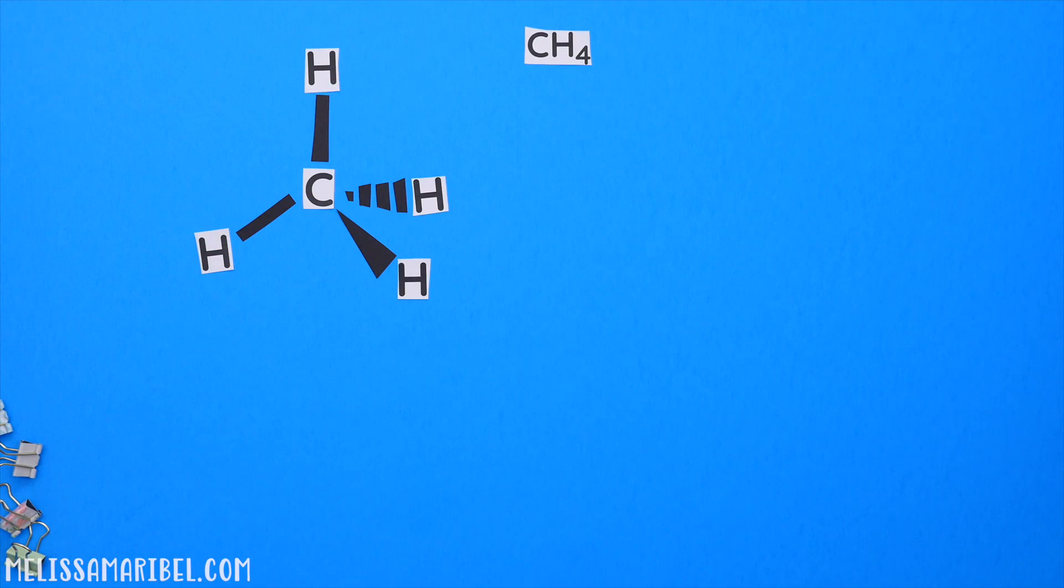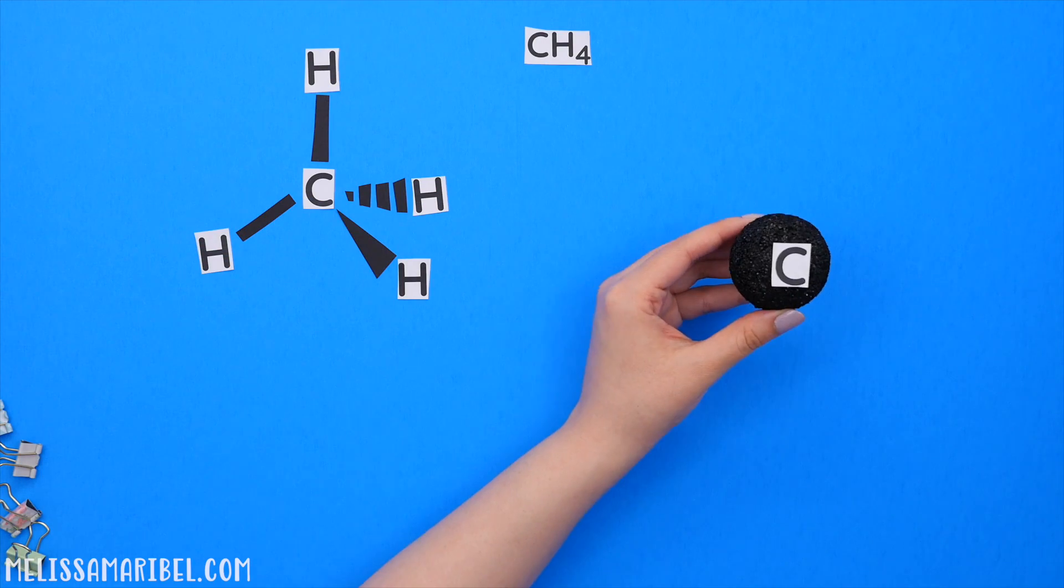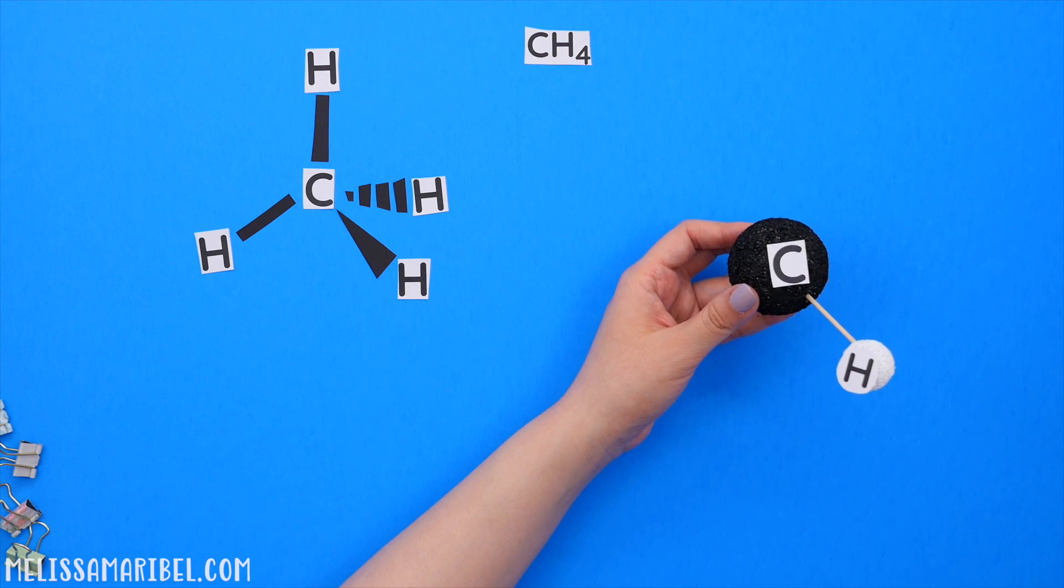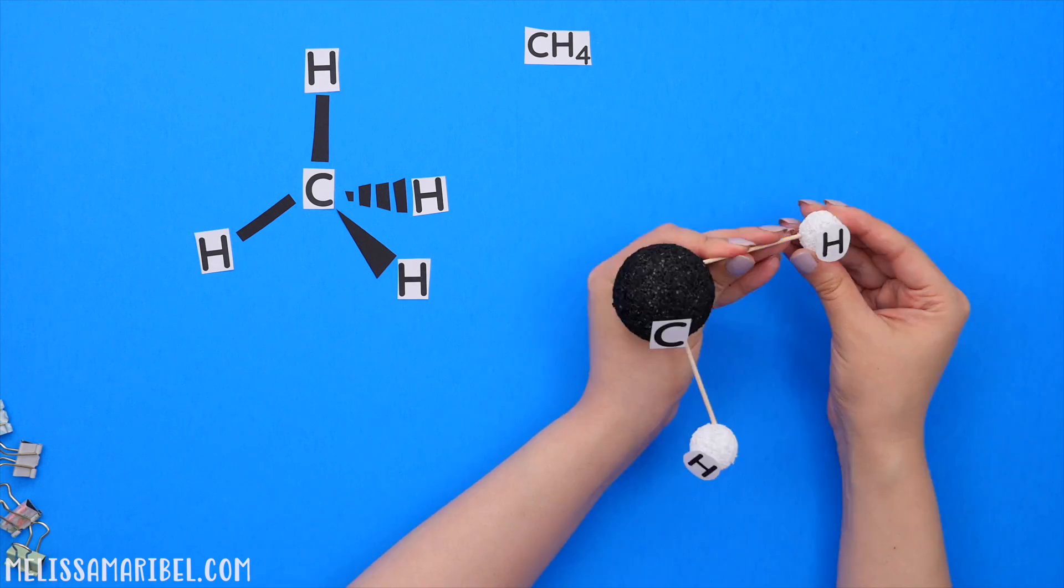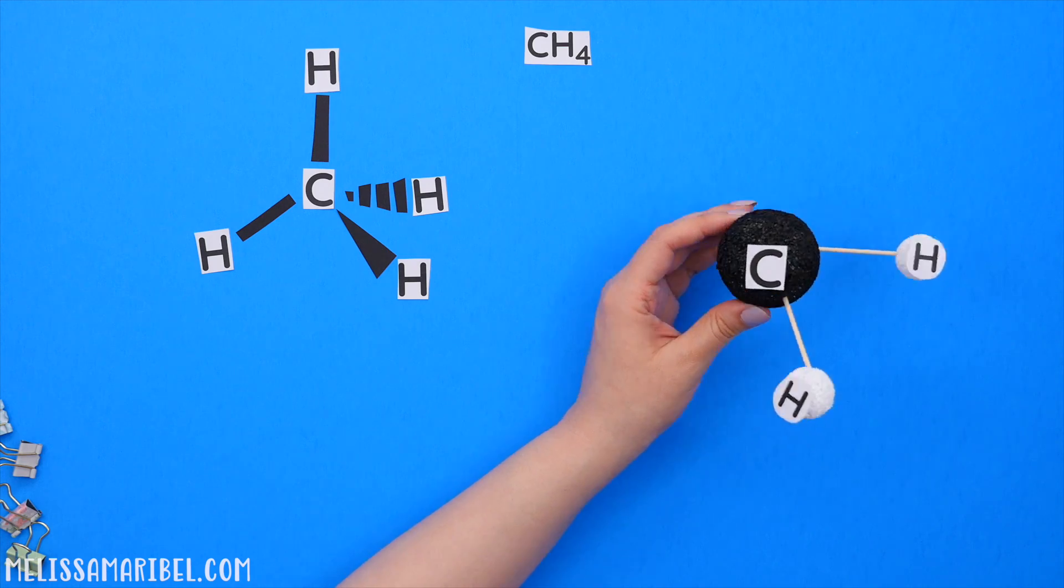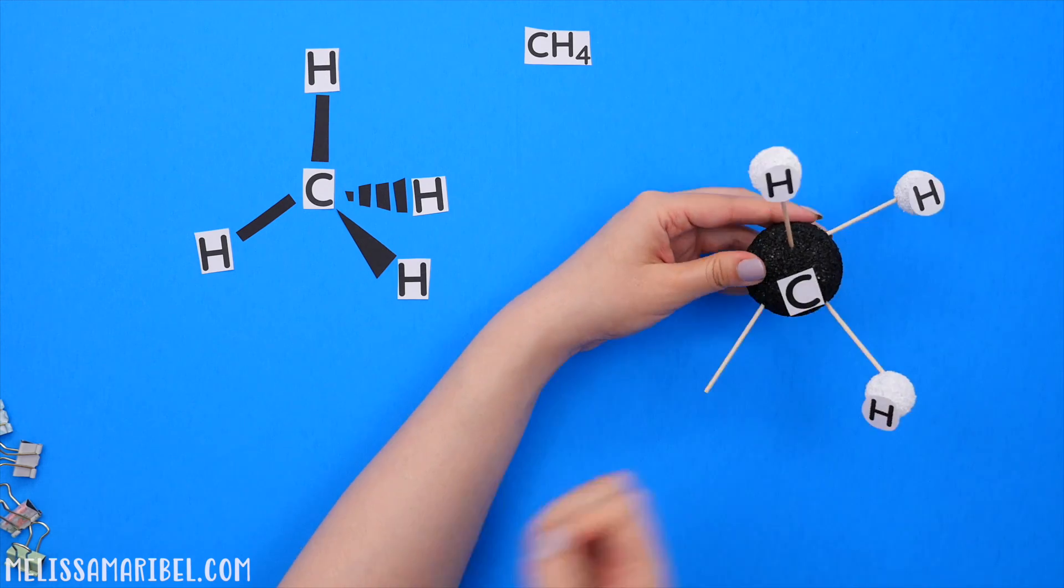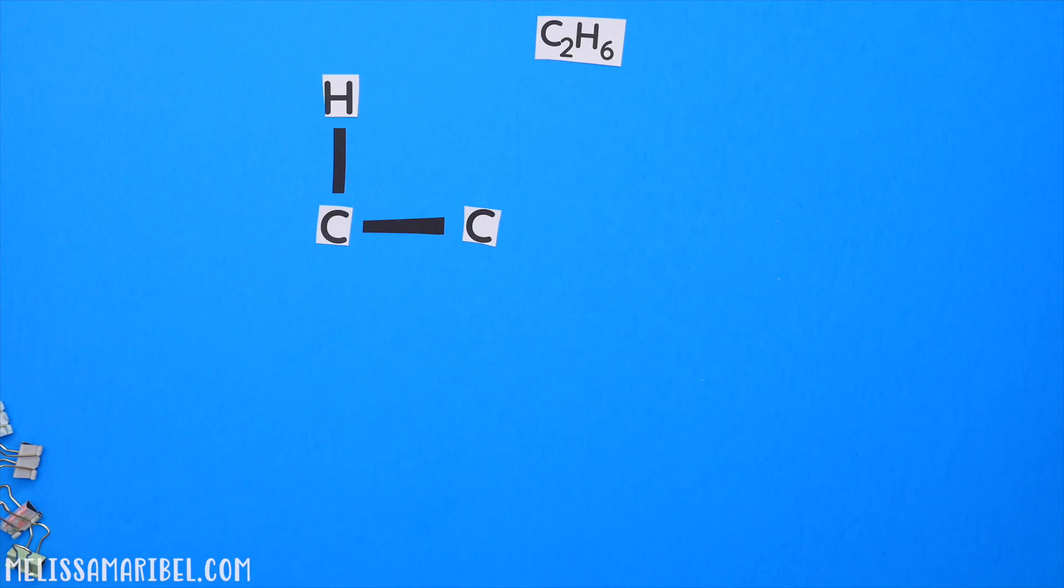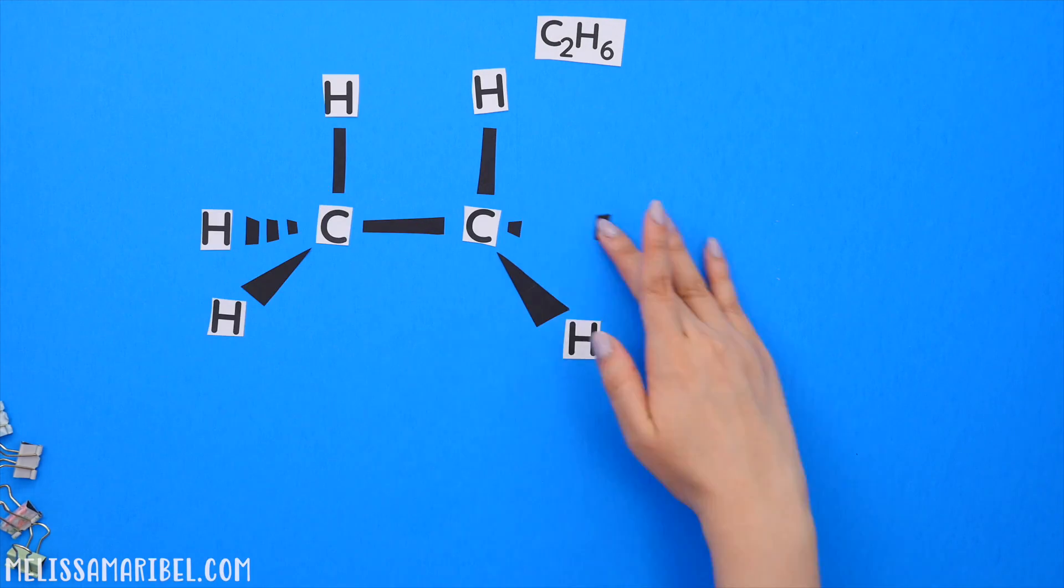Here's CH4 in its VSEPR form. Remember that a wedge line means the bond is coming towards you or out of the plane, while a dash line is hidden in the back and a solid line is on the plane of the paper, or think of it as it's in your line of sight.